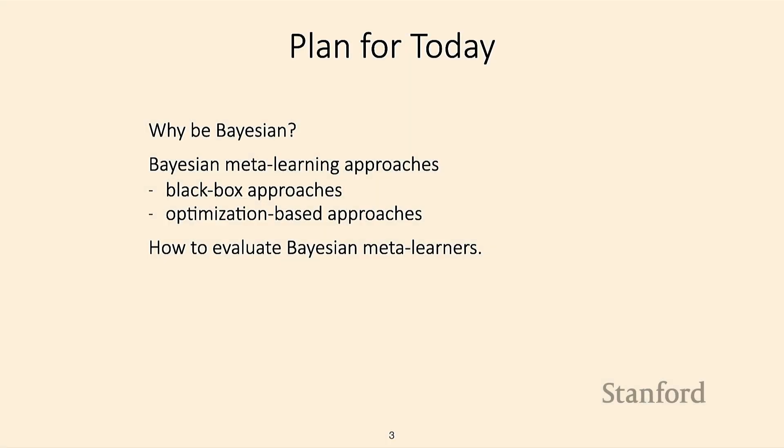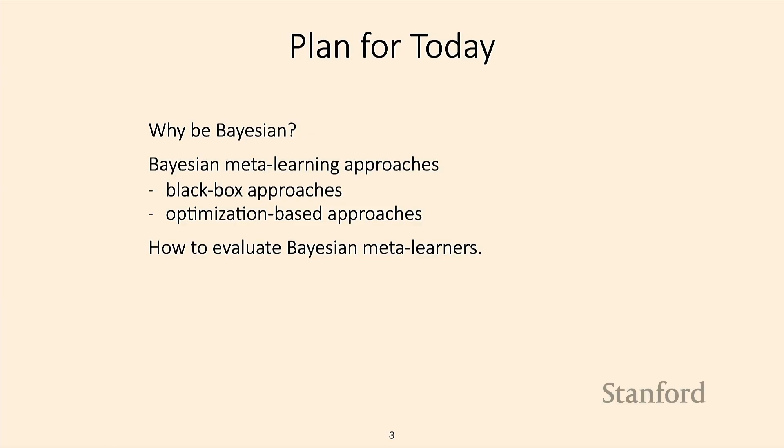On Monday, we talked a lot about variational inference and how to optimize for complex distributions of data. Today, we're going to put some of that into practice in the context of meta-learning algorithms. Specifically, we'll motivate why we might want Bayesian meta-learning algorithms, then talk about different classes including black box meta-learning algorithms and optimization-based algorithms, and lastly how to evaluate Bayesian meta-learning algorithms versus typical few-shot learning evaluation.